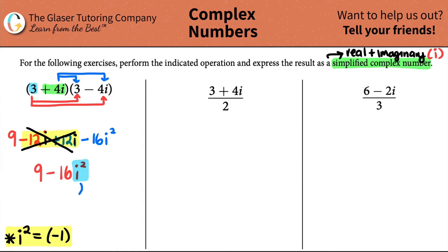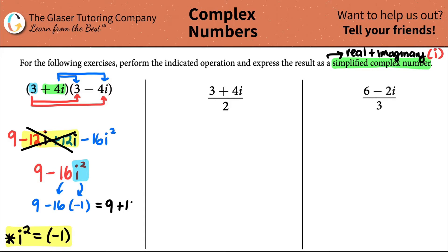Since i squared equals negative 1, I can replace it. The i squared is being multiplied by negative 16, so negative 16 times negative 1 is positive 16. Now we have 9 plus 16, and we don't have any imaginary numbers — just all real numbers. 9 plus 16 is 25, and that is your final answer for the first one.